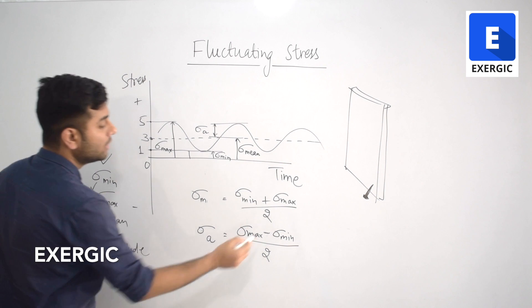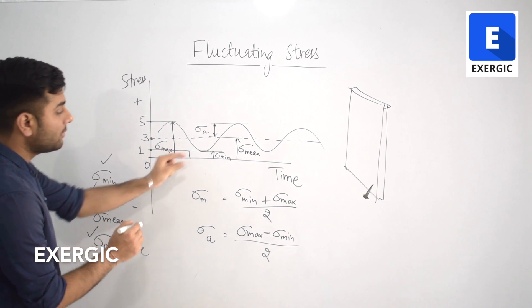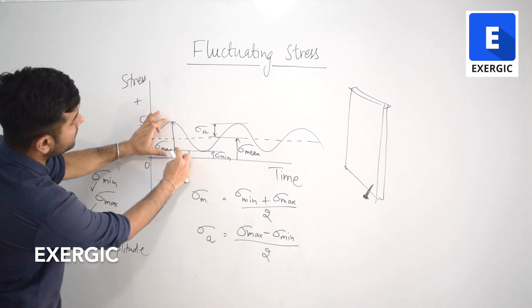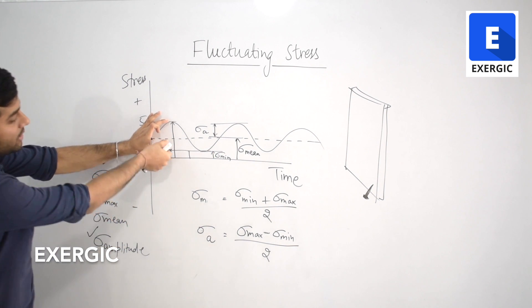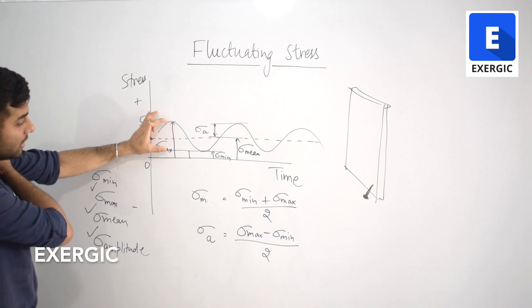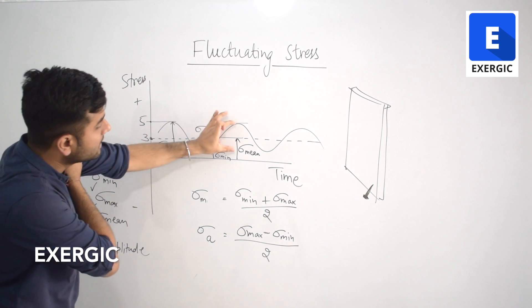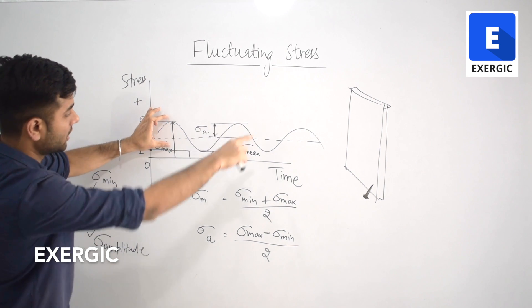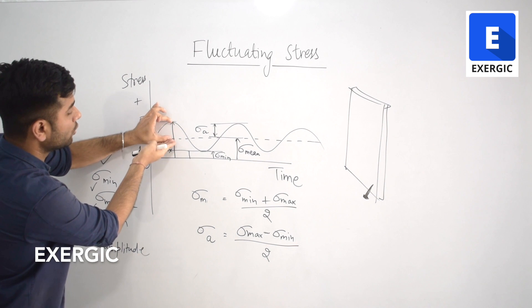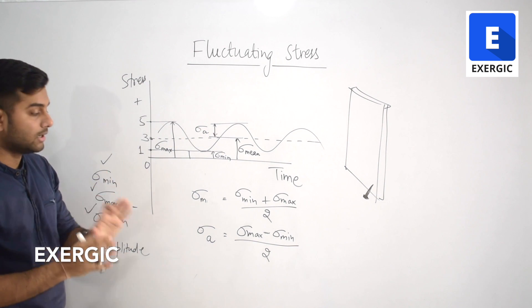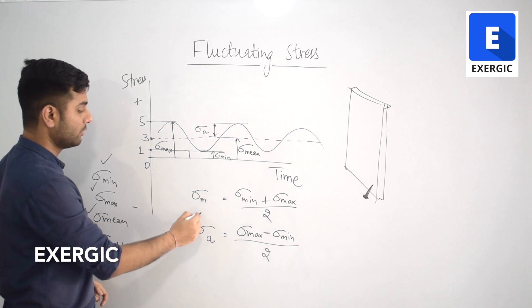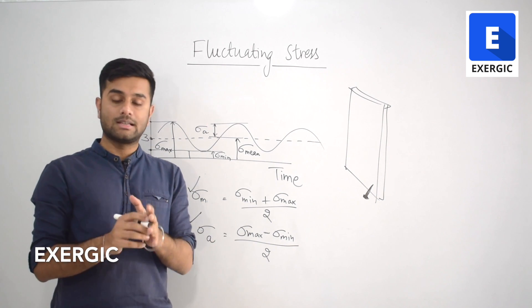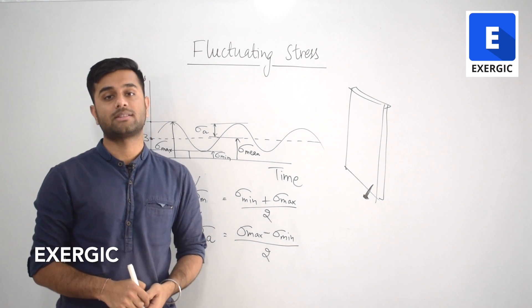Similarly, sigma amplitude is sigma max minus sigma min divided by 2. What you do is subtract the minimum value of stress from the maximum value — you remove the length equivalent to sigma min from it. What you have effectively is the total stress covered by this sinusoidal curve, and then you divide by 2 to reach the amplitude. These two relations — sigma m = (sigma max + sigma min)/2 and sigma a = (sigma max − sigma min)/2 — are very simple yet very important in the further discussion about fluctuating stresses.